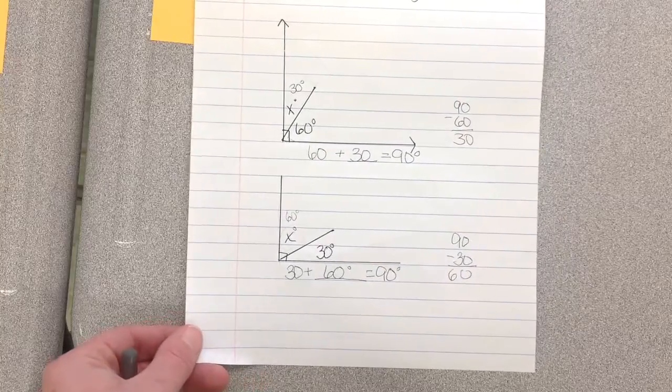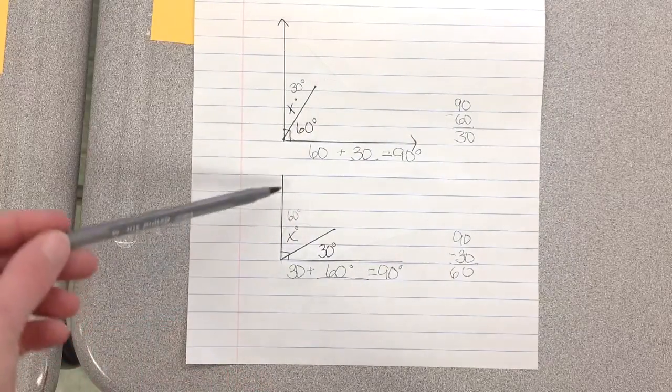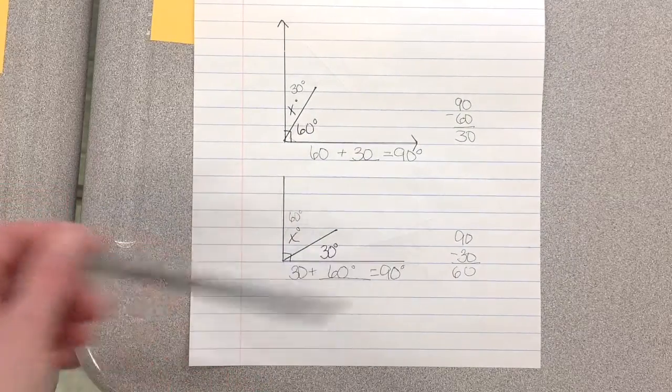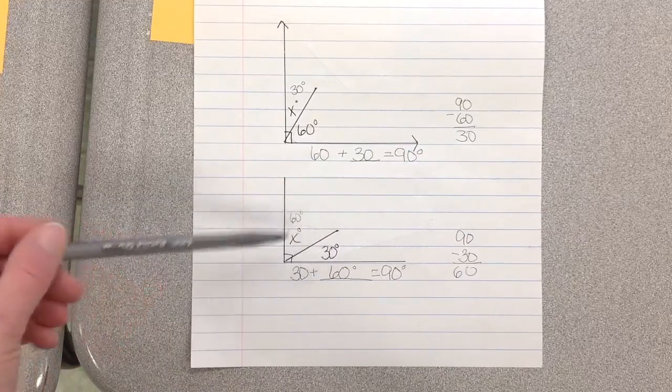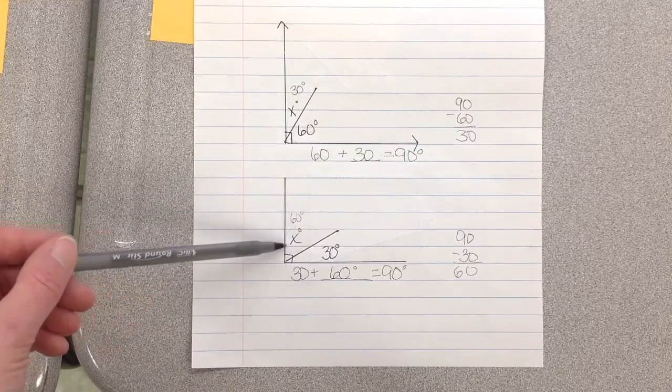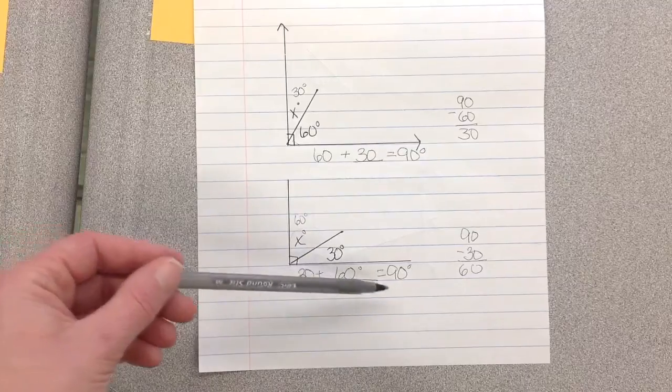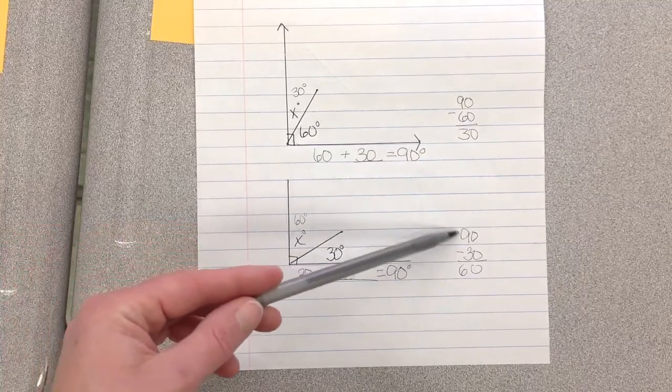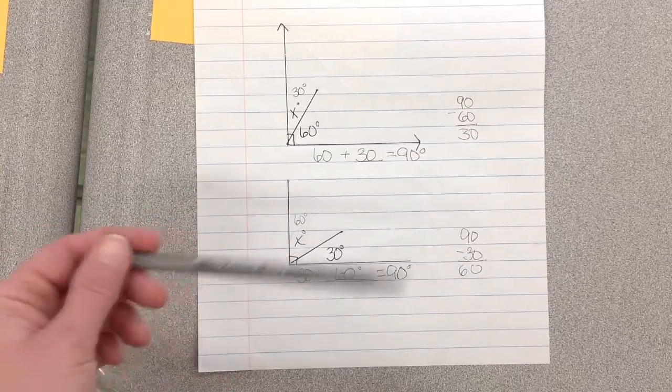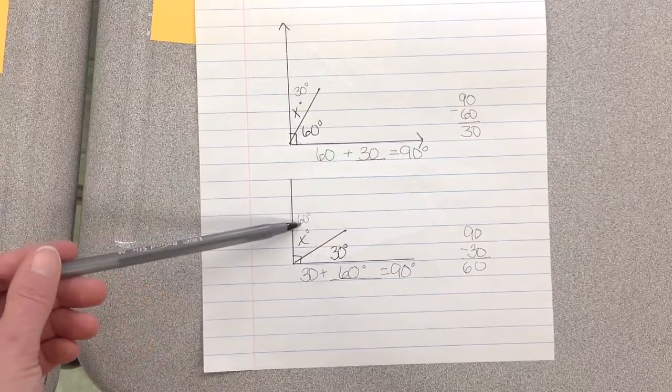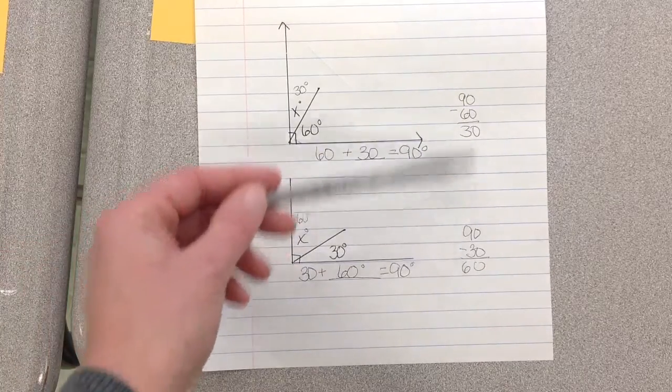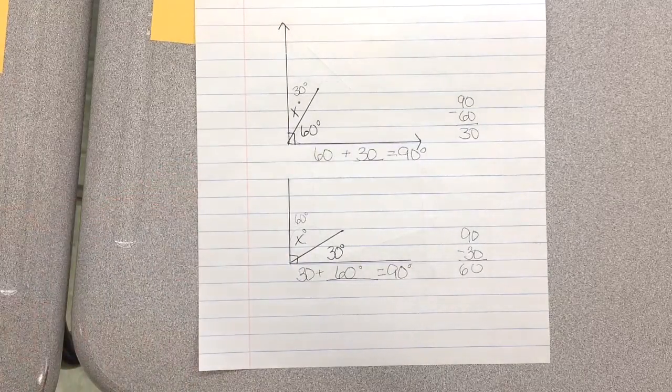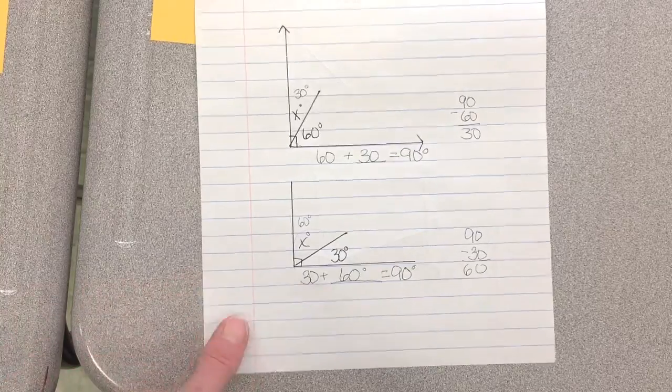Very similar down here. Looking, I know this entire angle is 90 degrees. I know this part is 30. This part we don't know. So 30 plus something is 90. If we subtract, 90 minus 30 is 60. So this one is 60. You probably could have done that in your head and that's fine. But if you need to write it down, please make sure that you write it down.